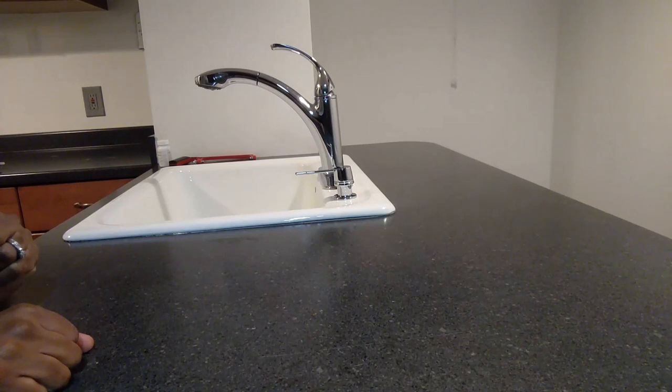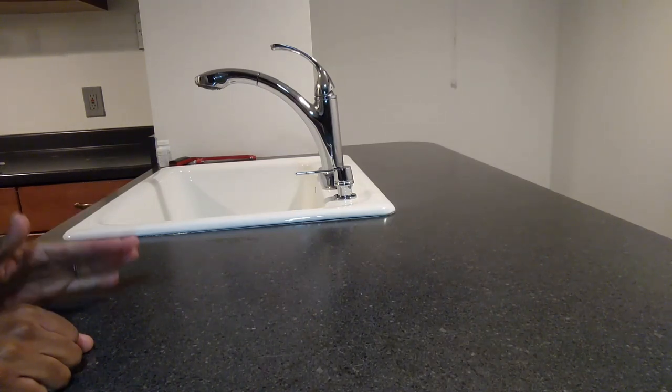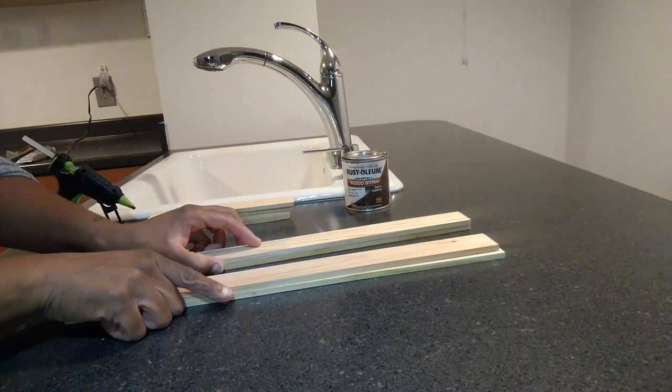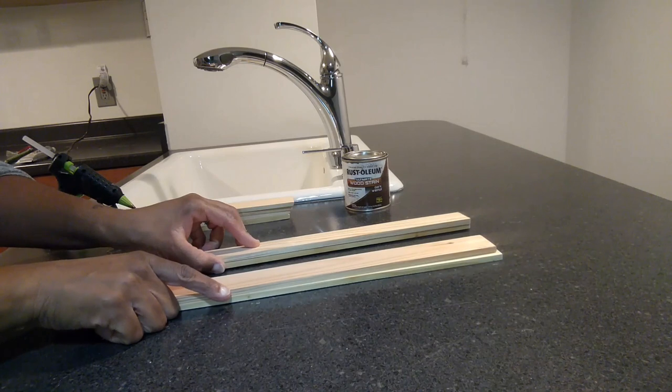Hey welcome back to my channel. Today I'm going to show you how to make this farmhouse style hand towel letter. To make your letter, you're going to need three packs of the five gallon paint mixing sticks.